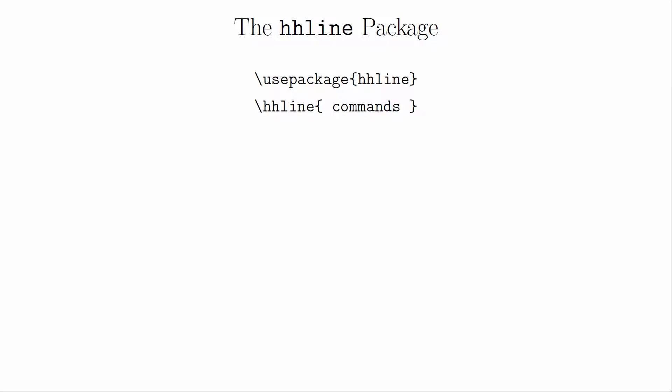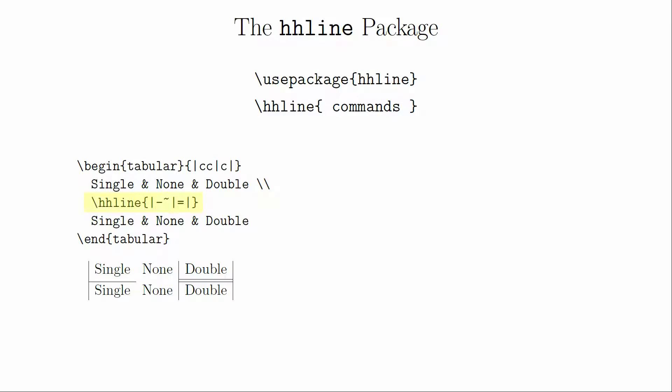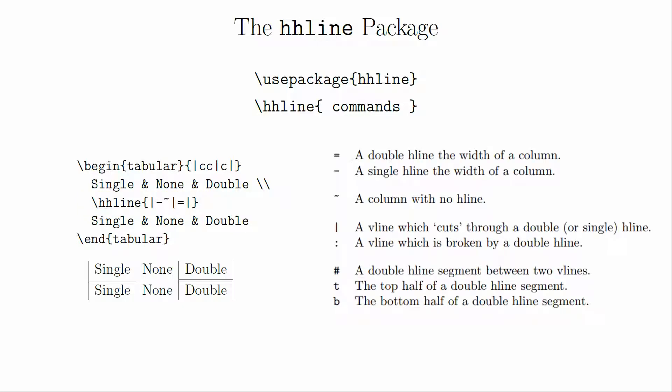If you want to get fancier with your horizontal lines, you will have to use the hhline package. With this package, instead of calling hline, you will call hhline and then specify how exactly you want the line to be drawn. A dash will give you a single line. An equals sign will give you a double line. And a tilde will create a gap.